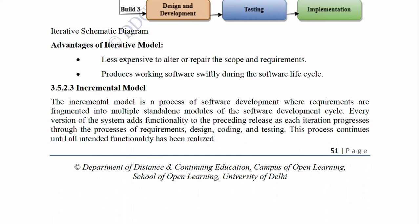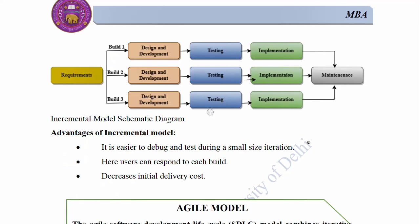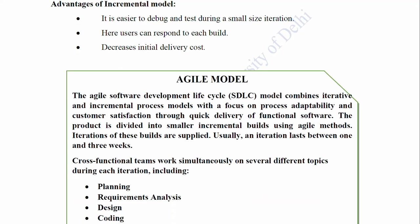3.5.2.3 Incremental Model: The incremental model is a process of software development where requirements are fragmented into multiple standalone modules of the software development cycle. Every version of the system adds functionality to the preceding release as each iteration progresses through requirement, design, coding, and testing. This process continues until all intended functionality has been realized. The incremental model schematic diagram shows requirements divided into Build 1, Build 2, Build 3, each following design, development, testing, implementation, and maintenance. Advantages: Easier to debug and test during a small-size iteration; users can respond to each build; decreases initial delivery cost.